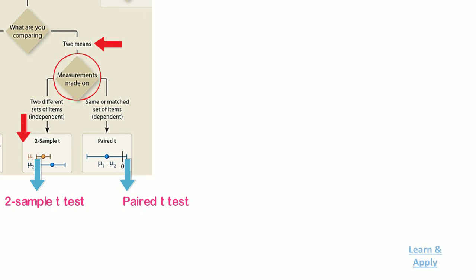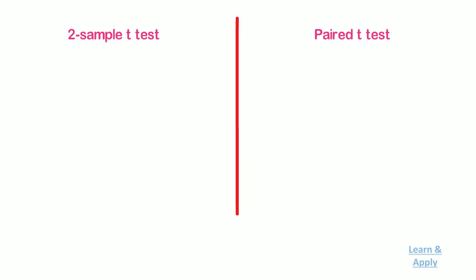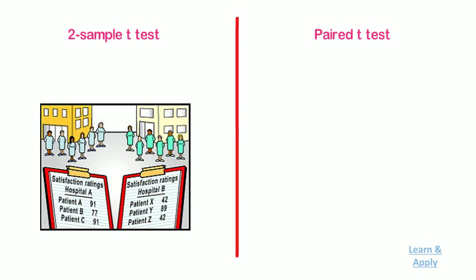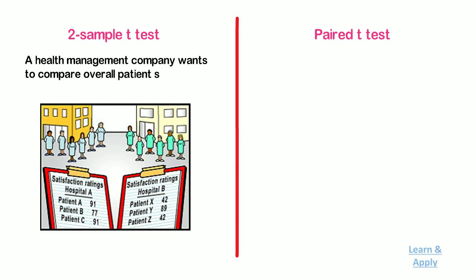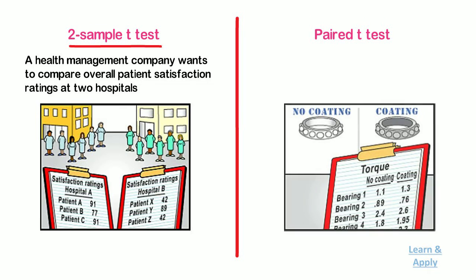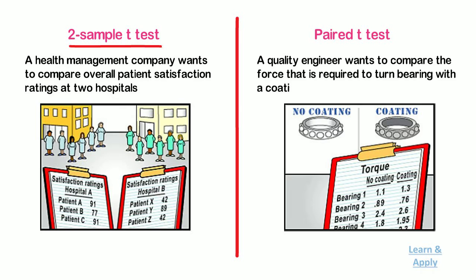If the measurements are made on two different sets of items — that is, independent items — then use the two-sample t-test. If they are made on the same items, use the paired t-test. For example, if a health management company wants to compare overall patient satisfaction ratings at two hospitals, they use the two-sample t-test. Whereas if a quality engineer wants to compare the force required to turn a bearing with a coating and without a coating on the same bearing, then he uses the paired t-test.